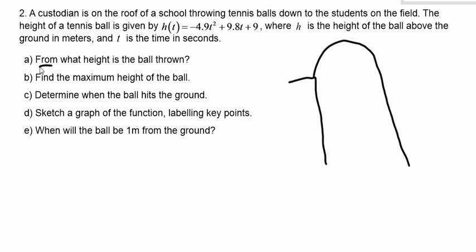Question A says, from what height is the ball thrown? The ball is thrown from the top of the roof. If I can find the height when the ball gets thrown, I can tell you the height of the roof. That is the moment that we start measuring using this equation. So that means that when time is zero, that's the starting height. So really what this is asking is find height when t equals zero.